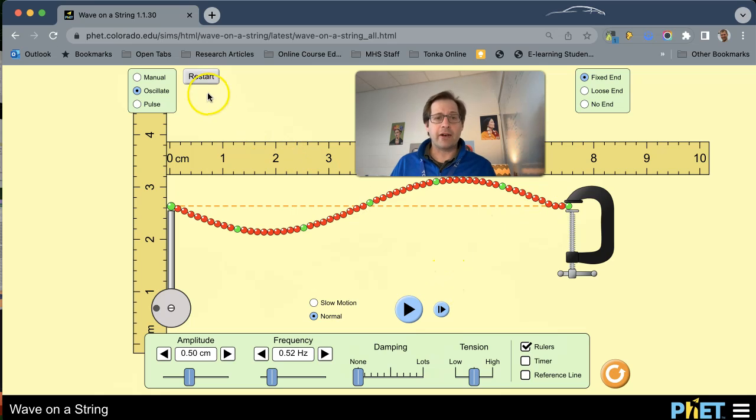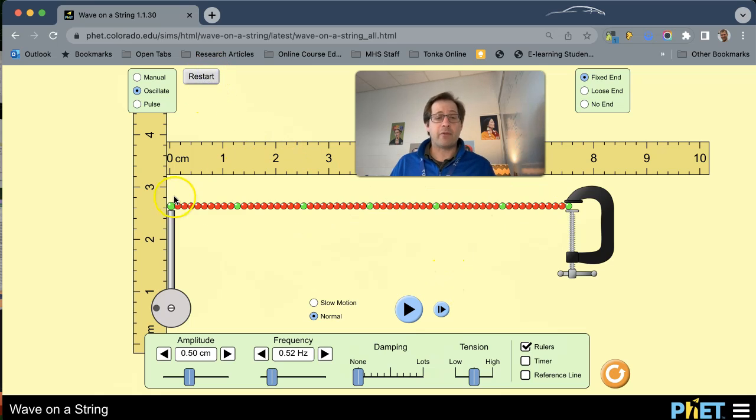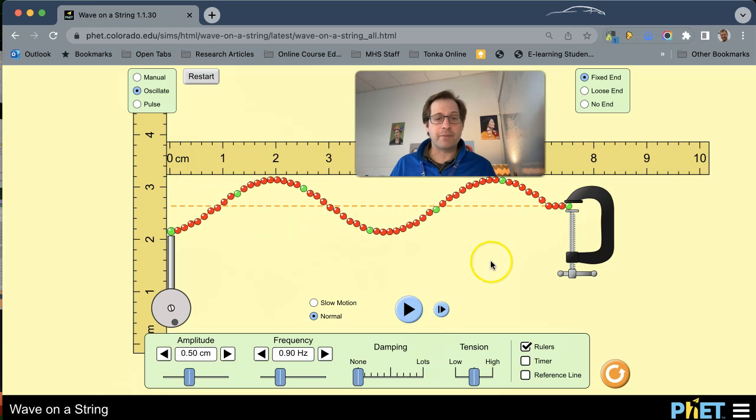The next trial you want to hit restart and that resets your string to zero and then change the frequency but keep everything else the same. So maybe about 0.9, let's try that. I'm going to again do one wave until it bounces back.